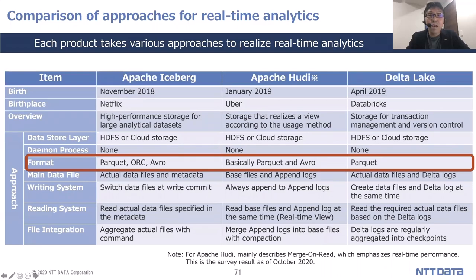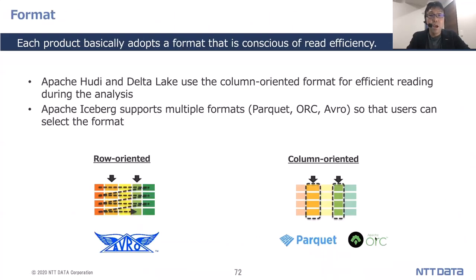Next, focusing on the format of each product: Apache Hoodie and Delta Lake mainly use the columnar format for efficient reading during analysis. Apache Iceberg supports multi-format — Parquet, ORC, and Avro — so the user can choose the format. Each product keeps read efficiency by using an effective format for analytics.